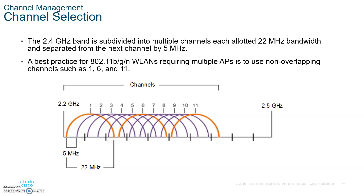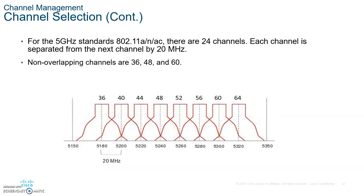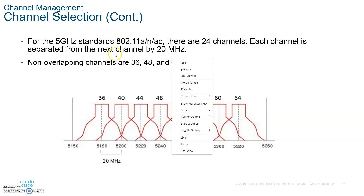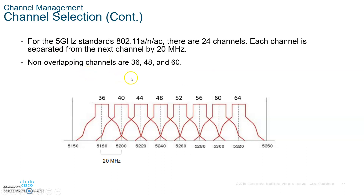Remember: 1, 6, and 11 for 2.4 GHz — most interference happens because of improper channel assignment. For the 5 GHz N and AC channels, we have 24 channels, and the non-overlapping ones to remember are 36, 48, and 60. So write those down: for 2.4 GHz use channels 1, 6, and 11; for 5 GHz use channels 36, 48, and 60.